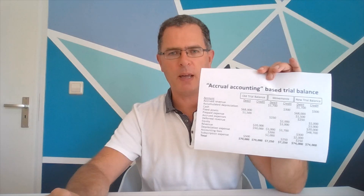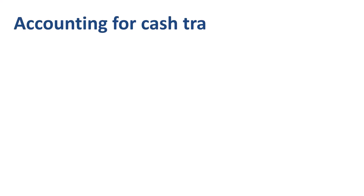If you are adjusting, you need something to adjust from and something to adjust to. You are adjusting from a cash accounting-based trial balance to an accrual accounting-based trial balance. Let's get some bank transactions onto a trial balance and then start adjusting. We are going to record a few sample cash transactions for a training and consulting company that also runs a YouTube channel, and then produce a cash accounting-based trial balance.